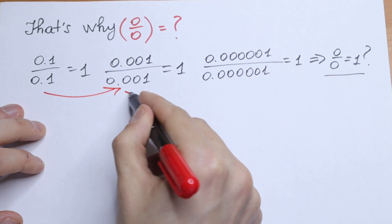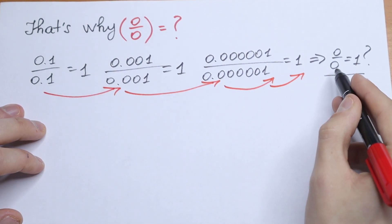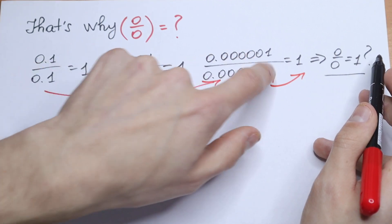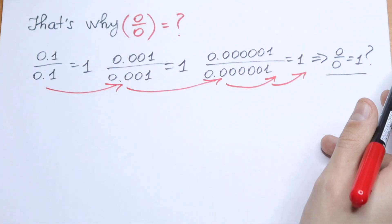So we are getting closer and closer to 0, and we will have 1, 1, 1, and this will be equal to 1. But this is correct or not? Take a look.